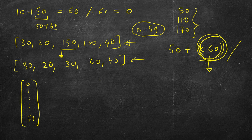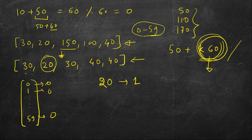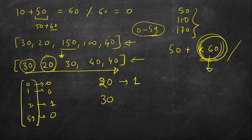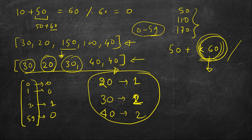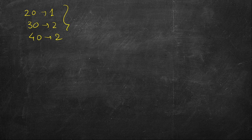In our example, after taking modulo 60, we get: 30 appears 2 times, 20 appears 1 time, and 40 appears 2 times. We store these counts in a counts vector of size 60 initialized to 0, then iterate the array and at each index increment counts at the modulo-60 value. All other counts remain 0.